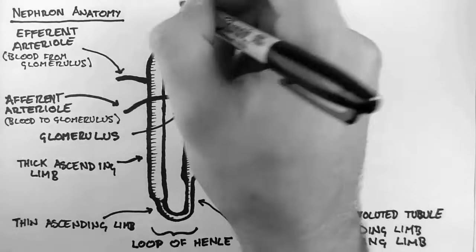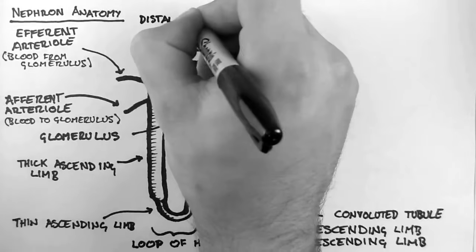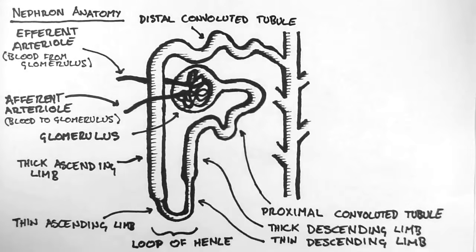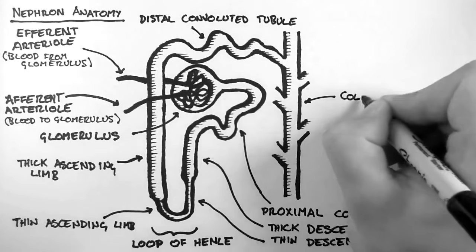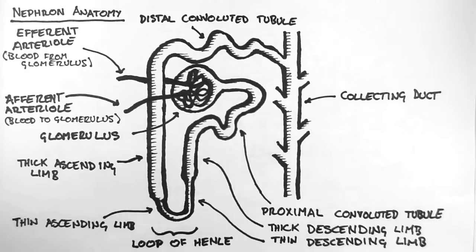This is the distal convoluted tubule at this point, and I have labelled this here. Then the distal tubule connects to the collecting duct. I spoke about the collecting duct in the last tutorial, and said that it takes the urine to the renal papilla in order for it to flow onward and out of the kidney.